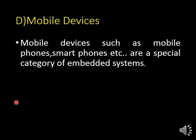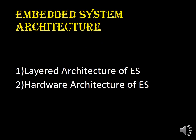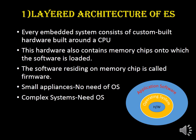The next category is mobile devices — such as mobile phones, smartphones, etc. — which are a special category of embedded systems. Now, embedded system architecture: there are two architectures — layered architecture and hardware architecture. In layered architecture, an embedded system consists of hardware and software. When we go for complex systems, application software alone is not enough; we need an operating system. But for small appliances, we do not need an operating system.